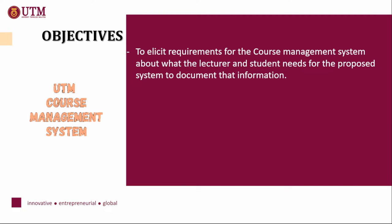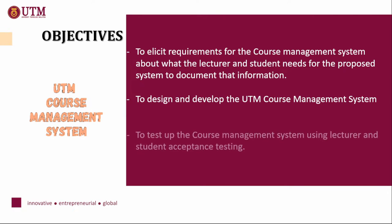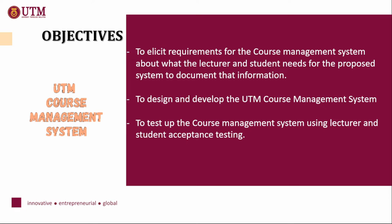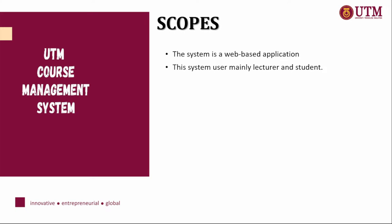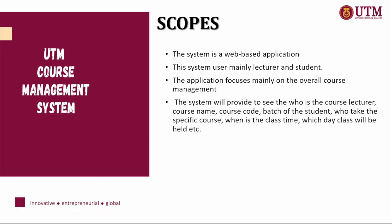Next, our project objectives. First, to elicit the requirements of the course management system — what lecturers and students need — and to document that information. Then, to design and develop the UTM Course Management System, and to test the system using lecturer and student acceptance testing. For project scope: the system will be a web-based application, used mainly by lecturers and students, focusing on overall course management including course lecturer, course name, course code, class time, class cancellations, and student performance analysis — both overall for lecturers and individually for students.